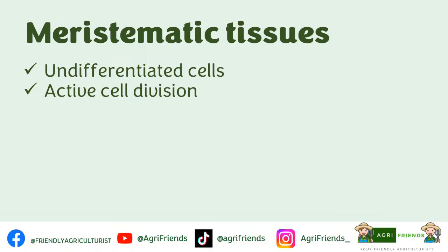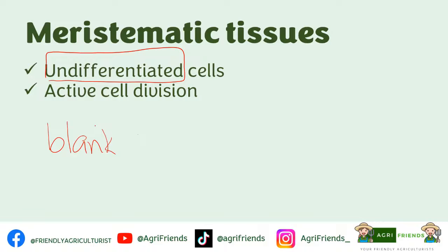Meristematic tissues are those that contain undifferentiated cells. What are undifferentiated cells? Those are cells that have not yet acquired a special structure or function — they are not yet mature. We call them the blank slate. The major function of these undifferentiated cells is to divide and create other cells, with the goal that the cells they create can become specialized to carry out a specific function. Once a cell or tissue is specialized, it is already mature, and we call them permanent cells or permanent tissues.